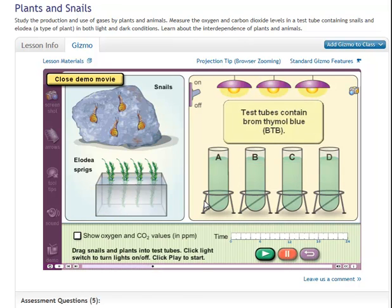The test tubes contain a chemical called bromthymil blue, or BTB for short. BTB is an indicator of gases. It changes color when the levels of oxygen and carbon dioxide change.